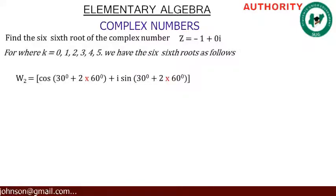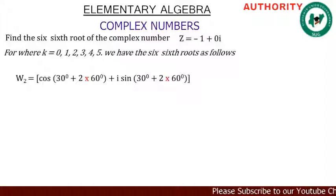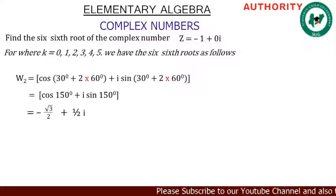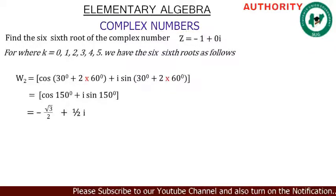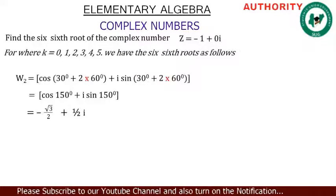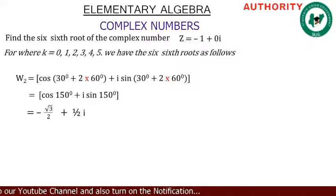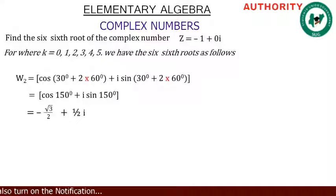For k = 2: w₂ = cos(30 + 2·60°) + i·sin(30 + 2·60°). Two times 60 = 120, and 120 + 30 = 150°. So cos(150°) + i·sin(150°). cos(150°) = -√3/2, and sin(150°) = 1/2, giving w₂ = -√3/2 + 1/2·i.